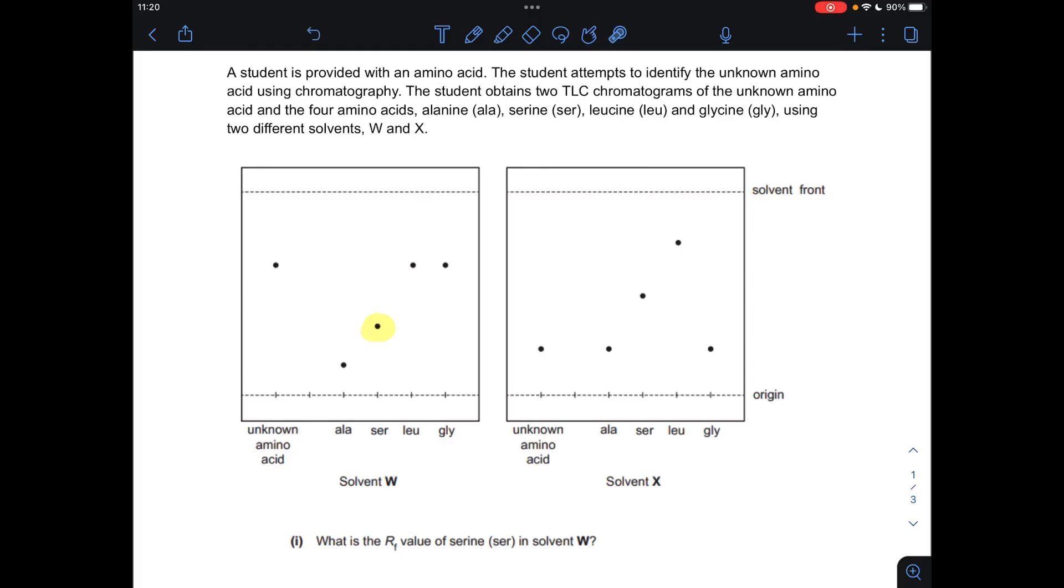What we need to do is measure the distance between the origin of the spot and where it gets to, that distance there, and we'll divide that by the distance traveled by the solvent, from there all the way to the solvent front here.